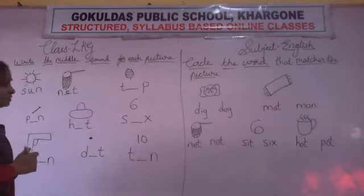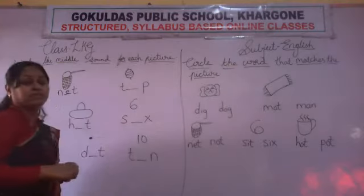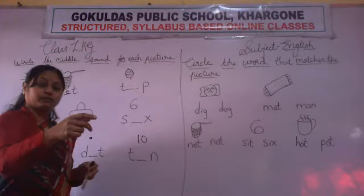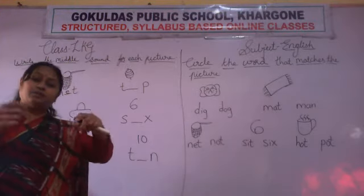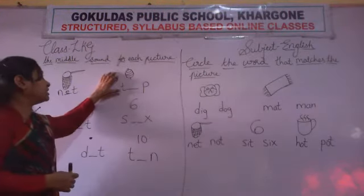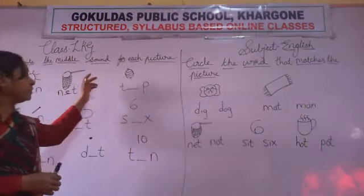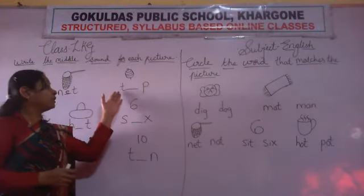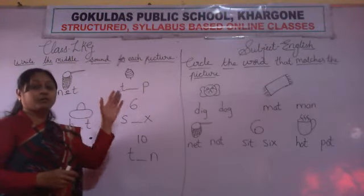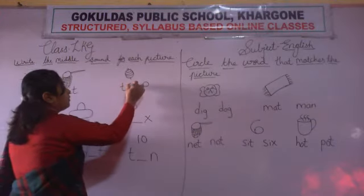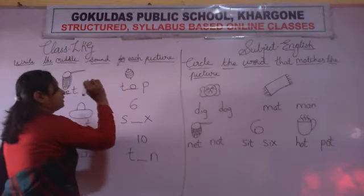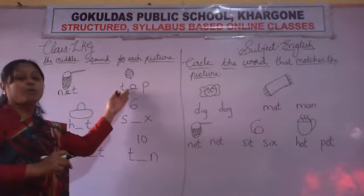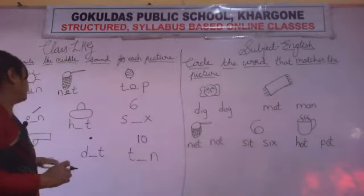Now look at the next picture. Which picture is this? This is picture of top. You will play with a top — you first wind it and then throw it. T-O-P. So which letter will come here? O. T-O-P.